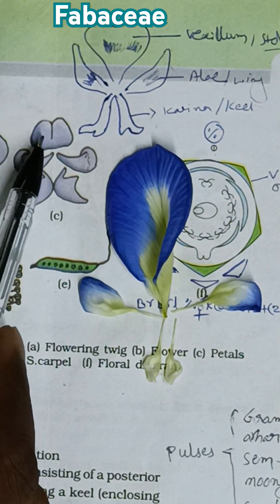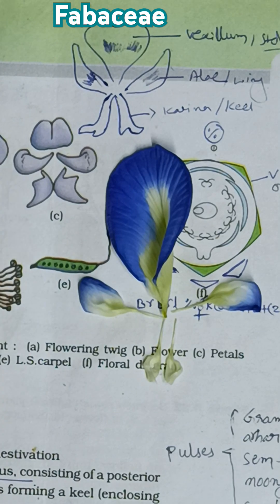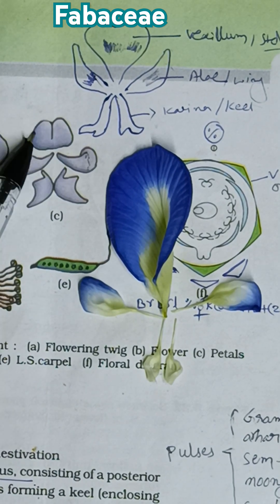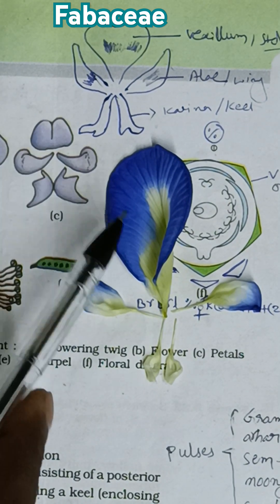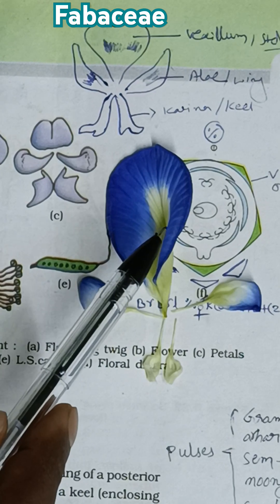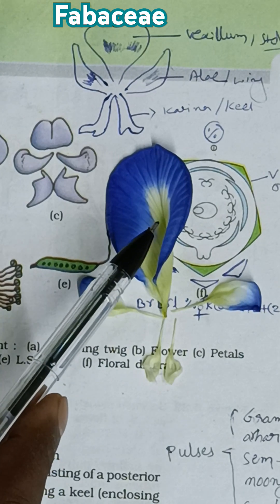I will explain all the different petals one by one. The topmost petal — you can see this is the petal present on the posterior side. It is called the standard petal, also known as the Vexillum.